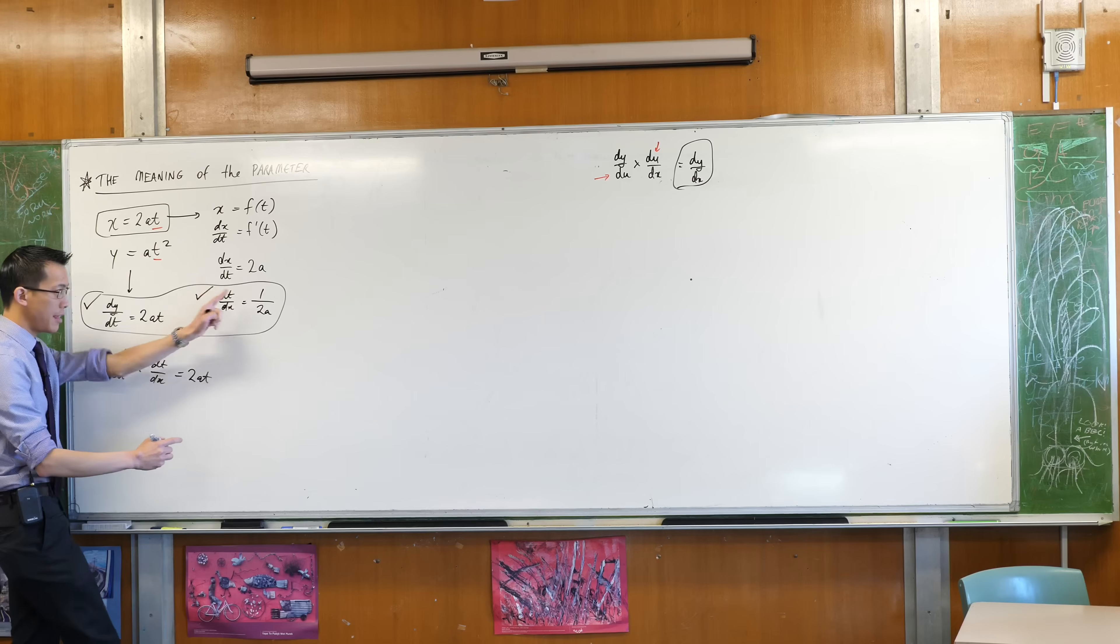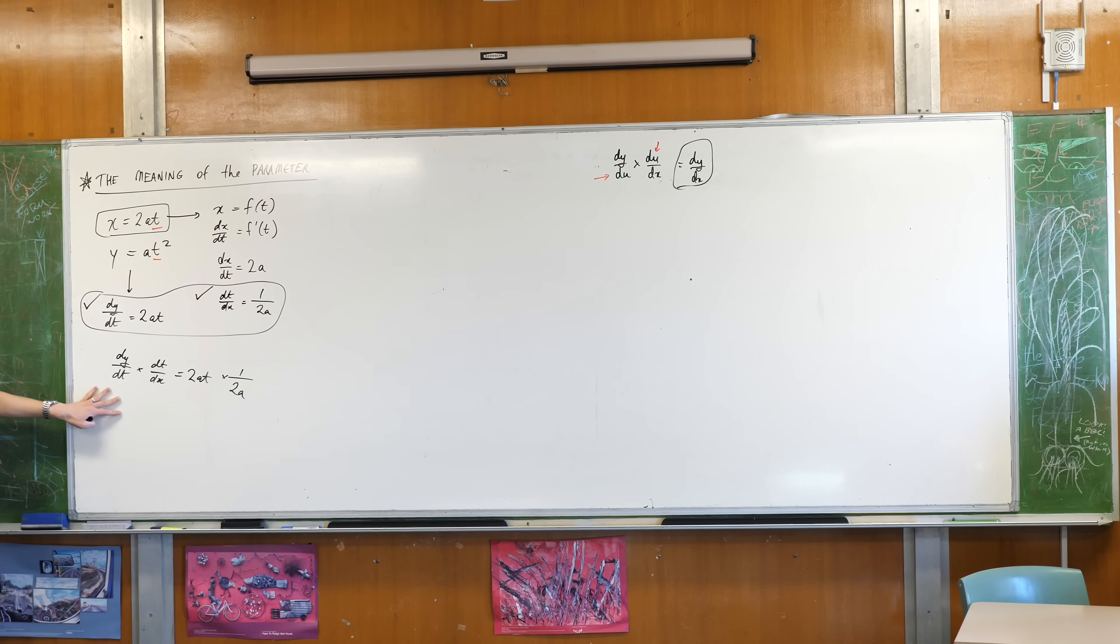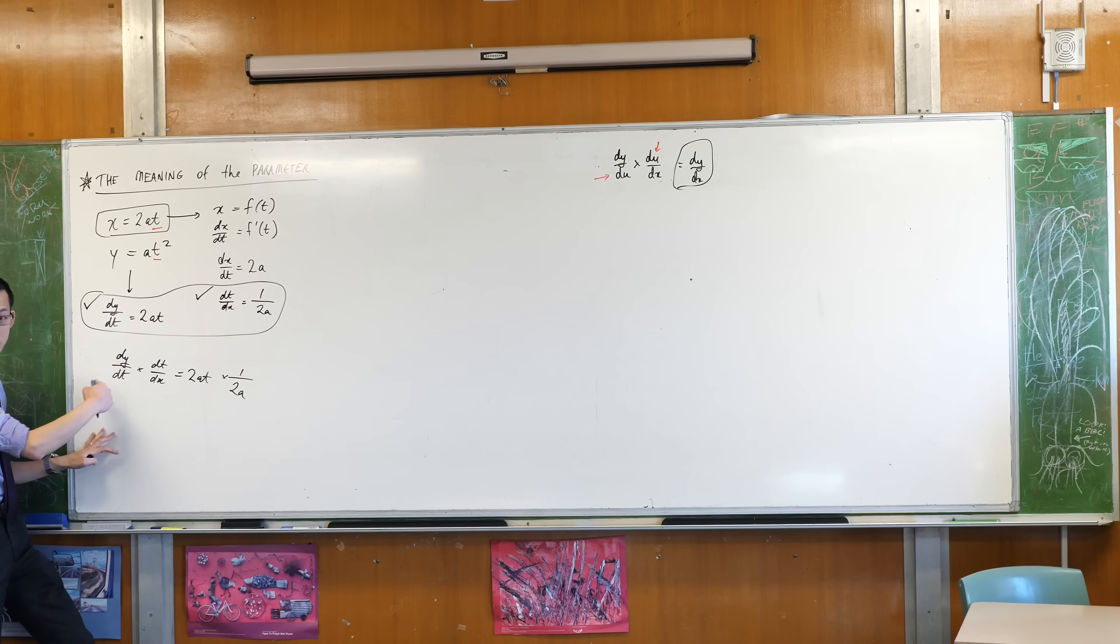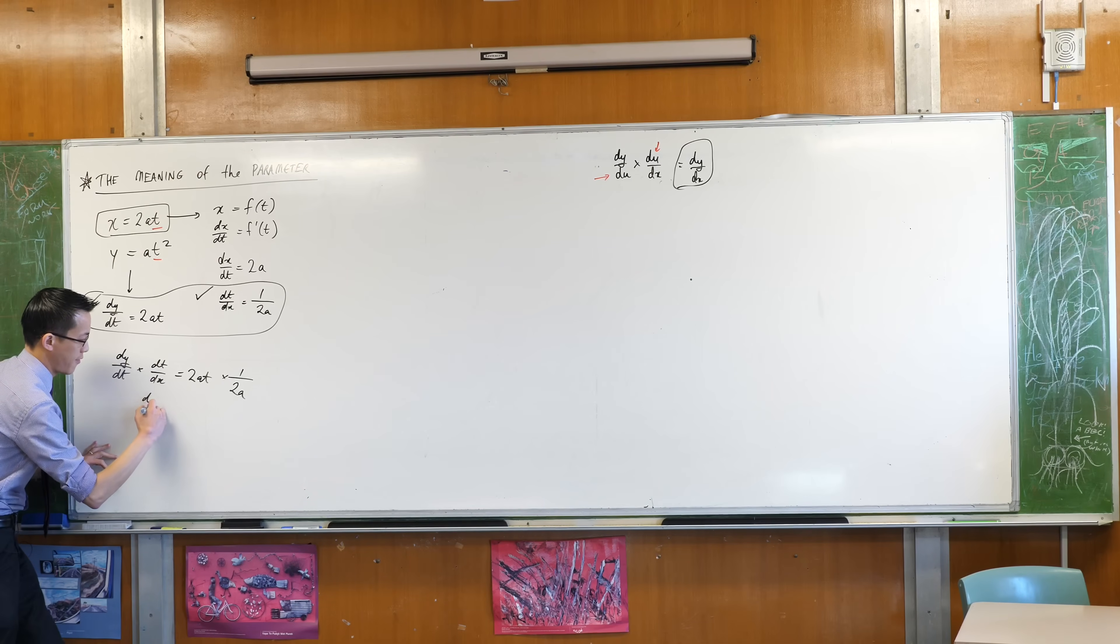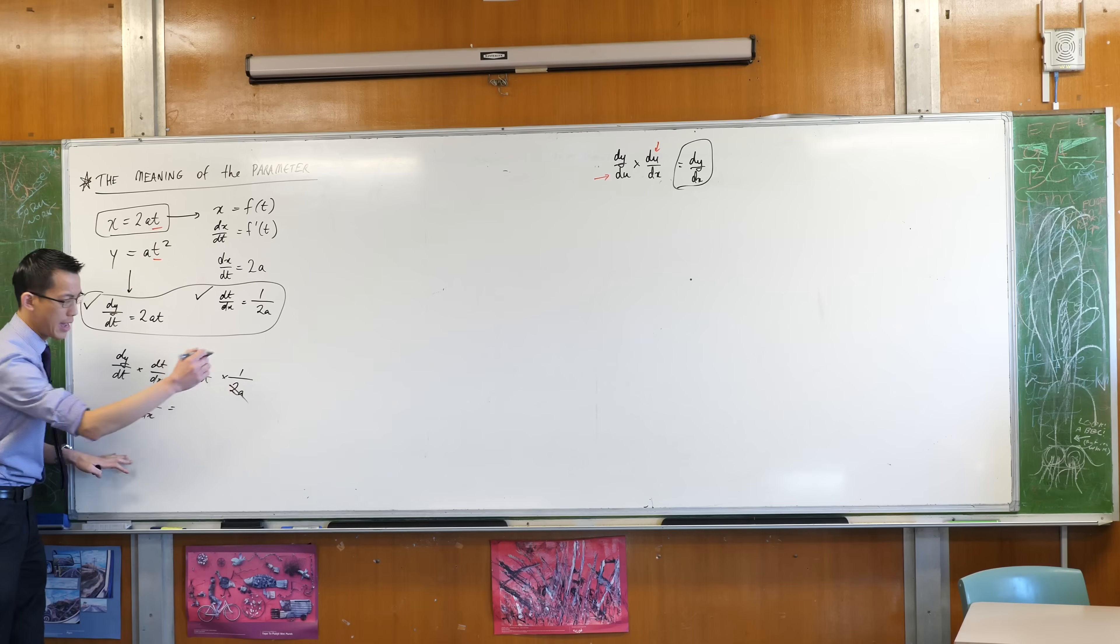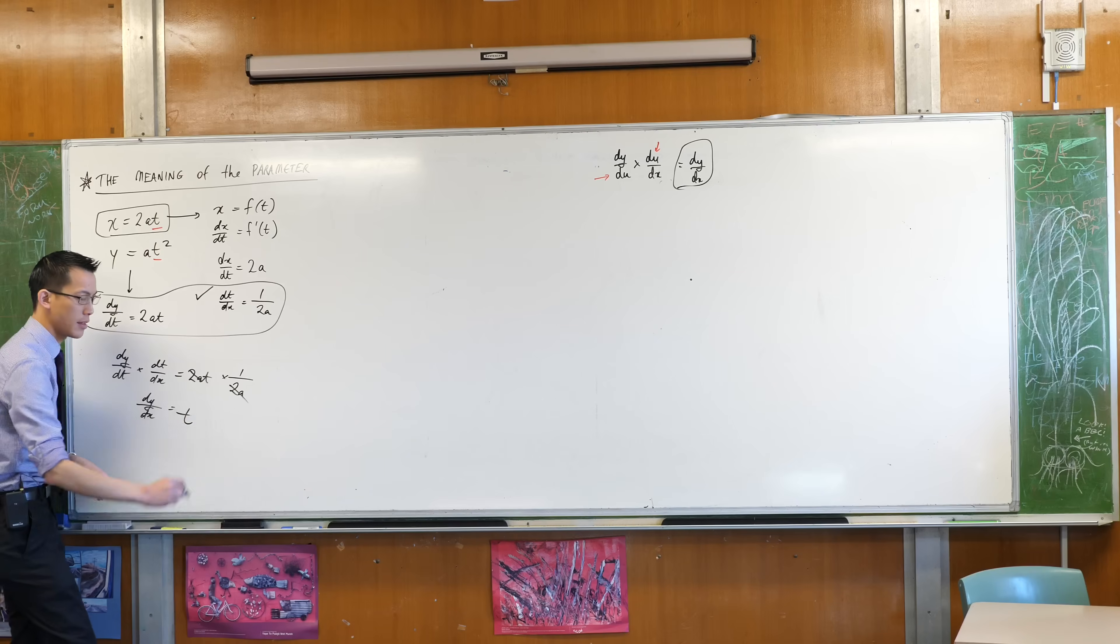There's the 2AT and here is 1 on 2A. Alright, on the left hand side, as predicted, like we have normally with chain rule, your dTs cancel. That's why we write these derivatives as fractions, to clarify that this can happen. So you just get dY on dX on the left hand side. And on the right hand side, well, stuff cancels, right? Like 2A, 2A, all gone. So all that leaves behind is T.